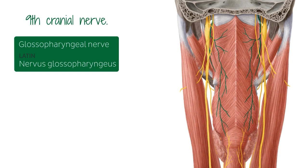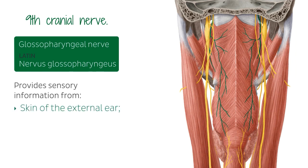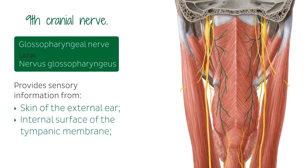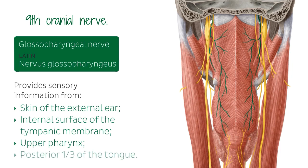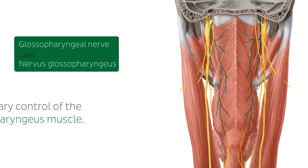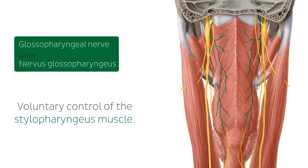This nerve leaves the skull through the central part of the jugular foramen. It provides sensory information from the skin of the external ear, the internal surface of the tympanic membrane, the upper pharynx, and also the posterior one-third of the tongue. It also provides voluntary control of the stylopharyngeus muscle, which elevates the pharynx during swallowing and speech.